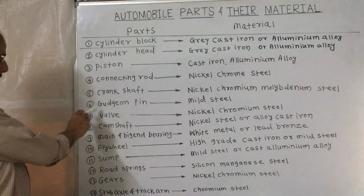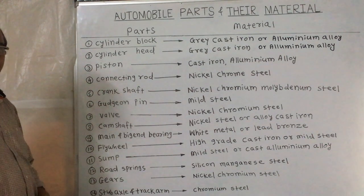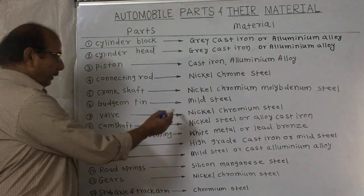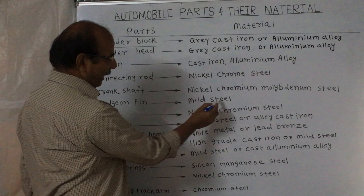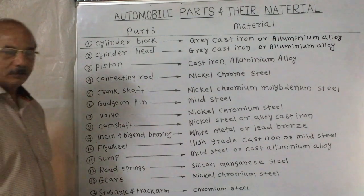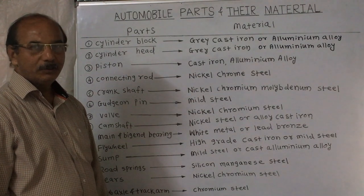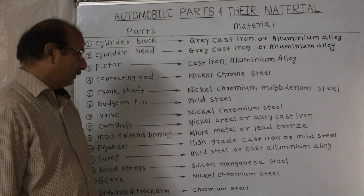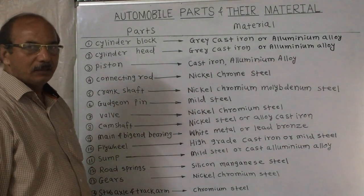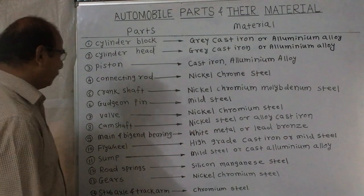Next one is the gudgeon pin, which is used to connect the piston and the connecting rod. It should be hard, that's why it is made from high-carbon steel. Then the valve — nickel-chromium steel. The valve is used to open and close the port in a cylinder head. It should not wear or damage early, that's why nickel-chromium steel is used for the valve.